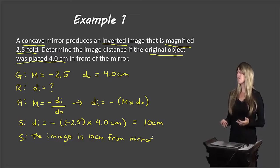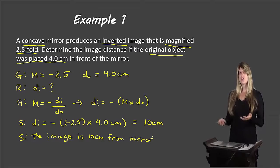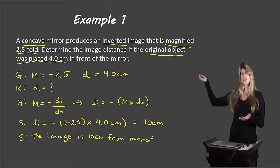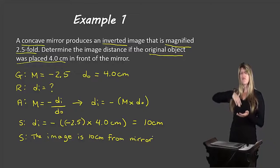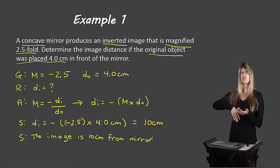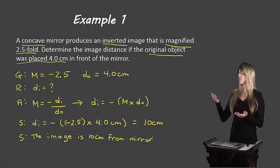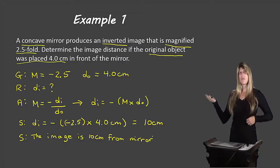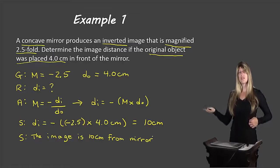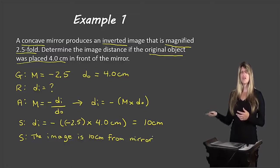Let's pause and think about whether this makes sense. We have a concave mirror, and whenever concave mirrors produce inverted images — as stated in the question — those images are always real. Since our answer DI is a positive number, that means the image is real.